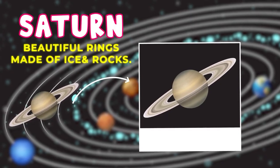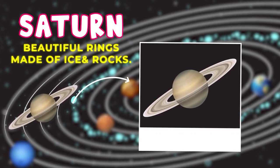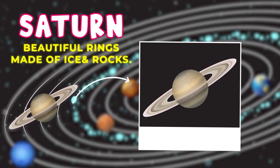Saturn. Saturn is famous for its beautiful rings. These rings are made of ice and rocks, and they're super cool to look at.